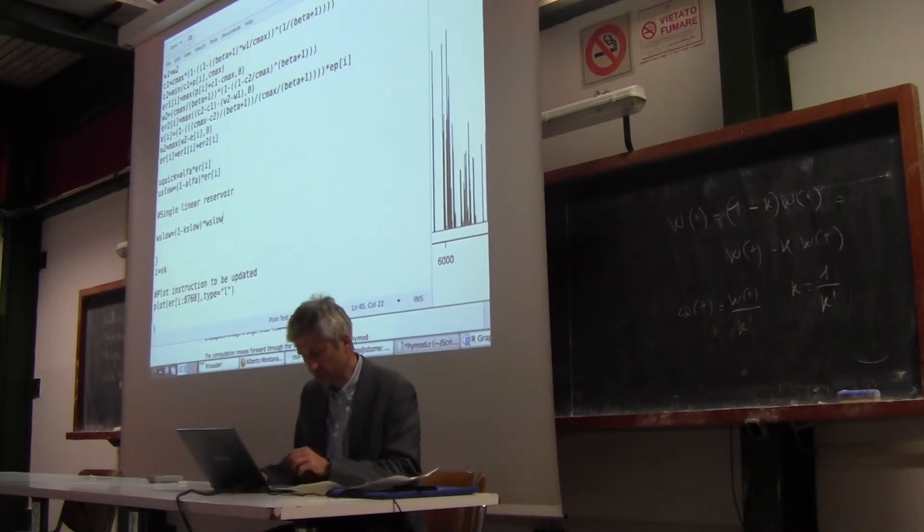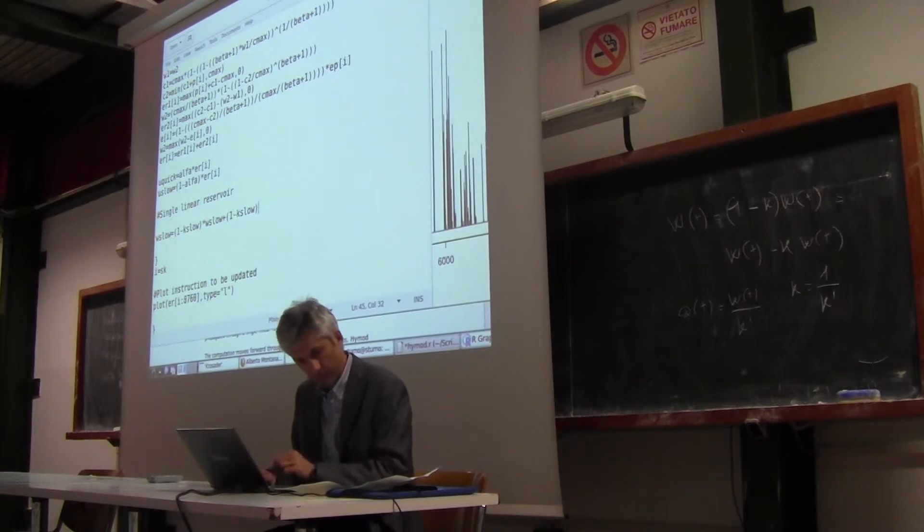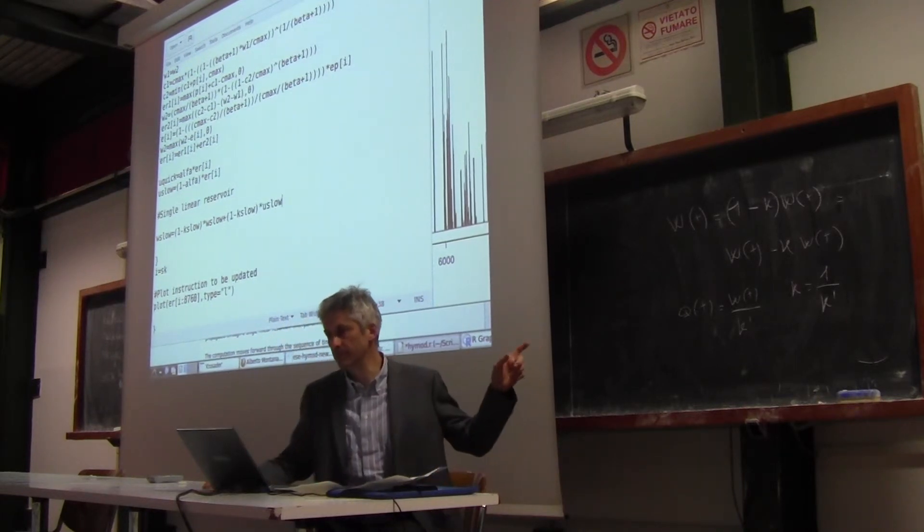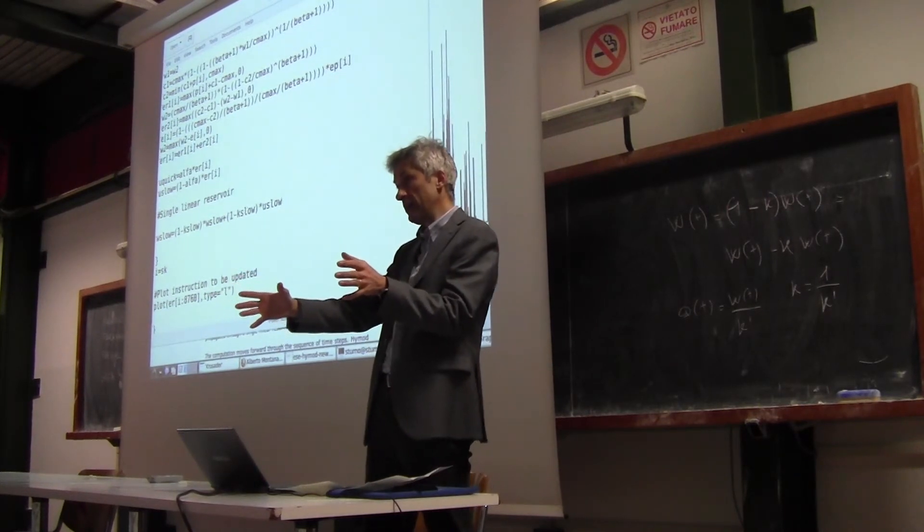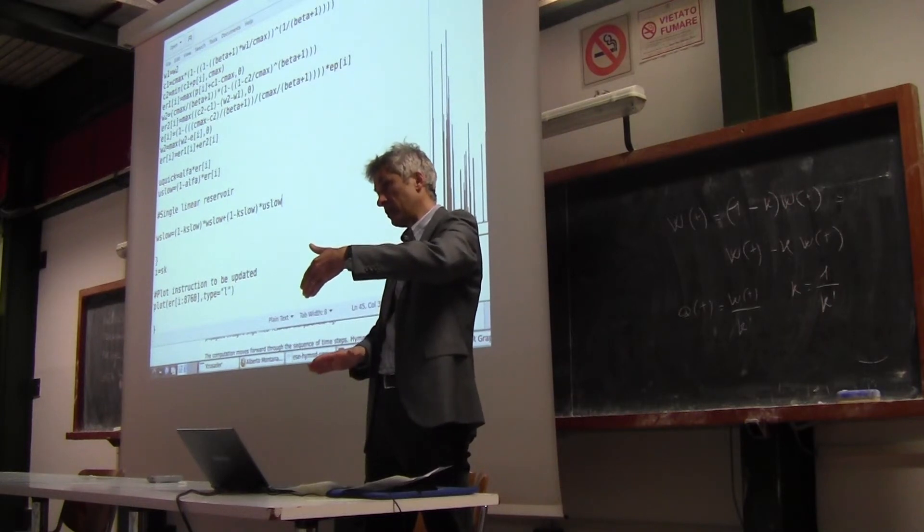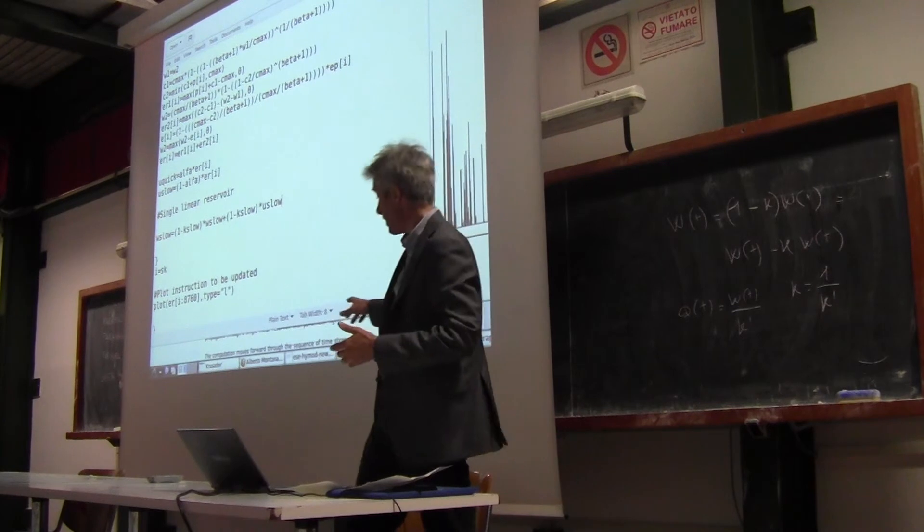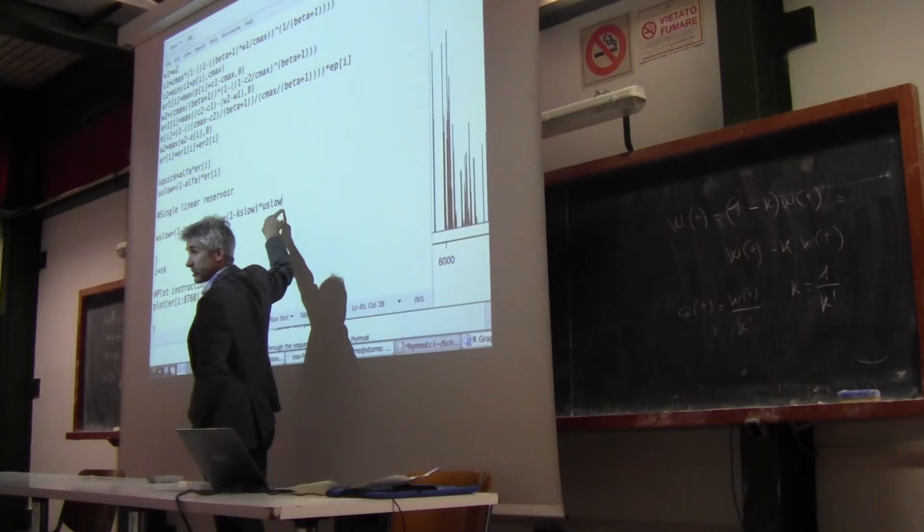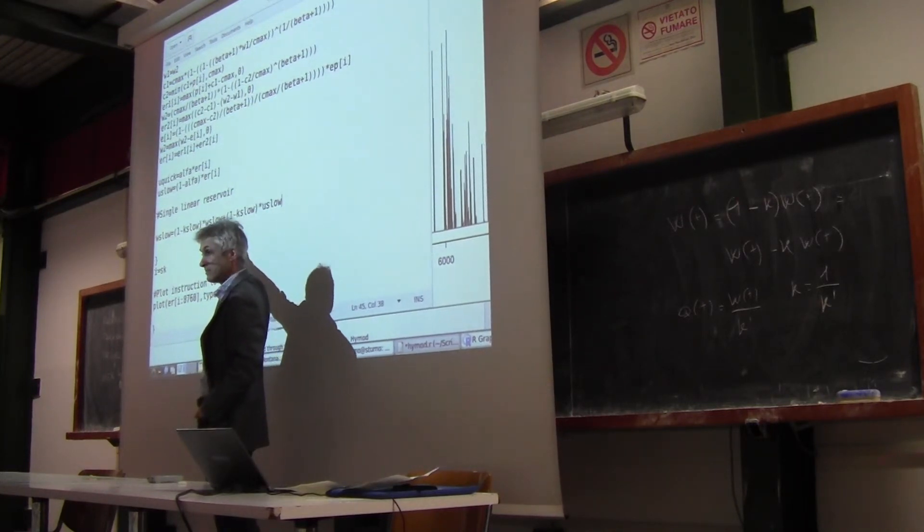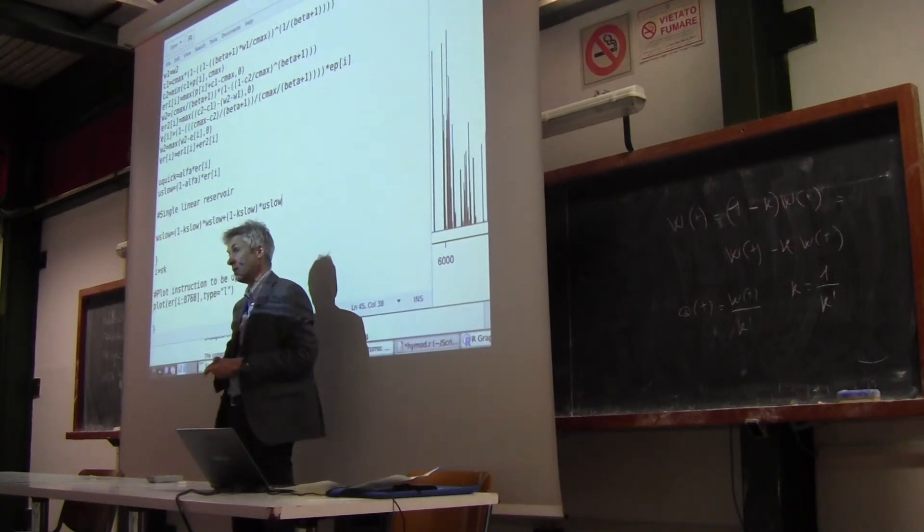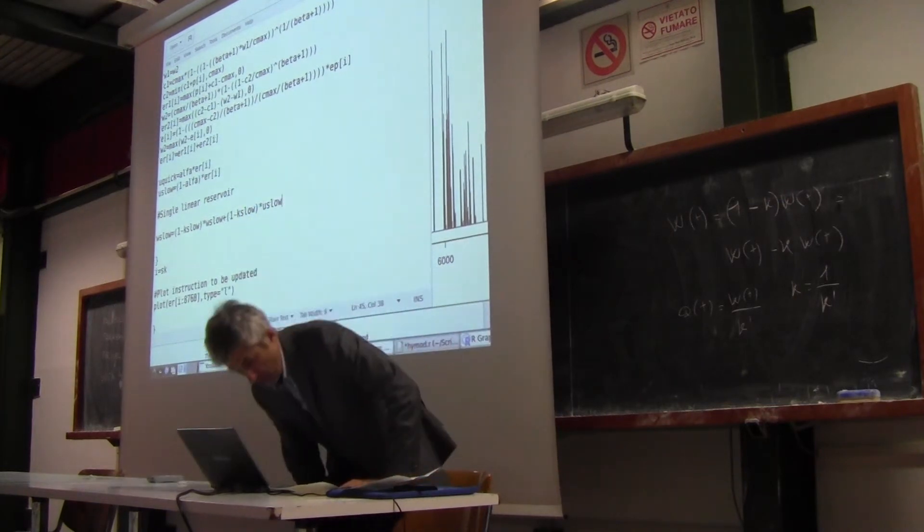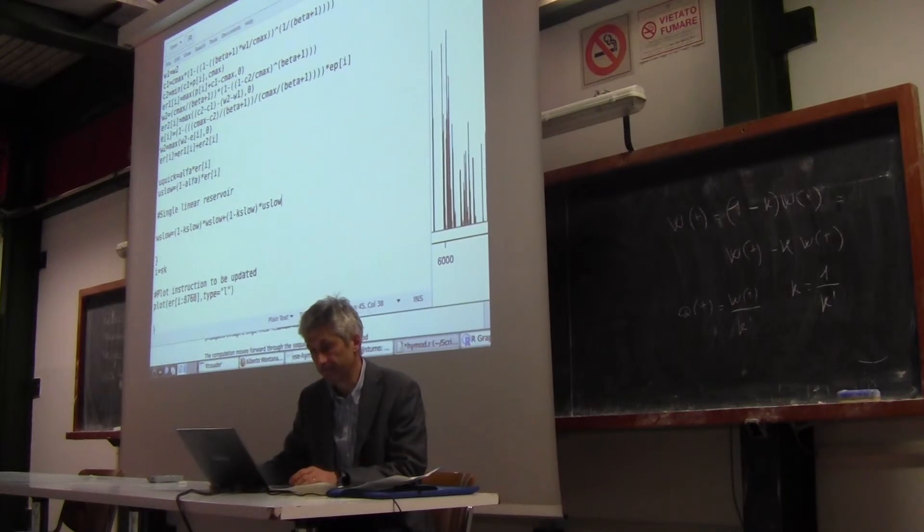And then this means that now we have to add the input. And then let's complete it. We need to write one plus, again, one minus K slow times U slow. So U slow is the input, but be careful, we can't write the, we can't add the bulk input, because while the input is coming in, it is originating a corresponding outflow. And therefore, this is why the input, which is the gross input, which is U slow, is computed by one minus K again, because part of the input remains a storage part of the input. While it comes in, it goes out through the outflow.